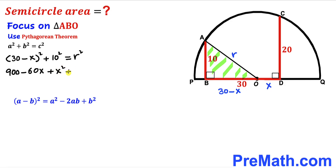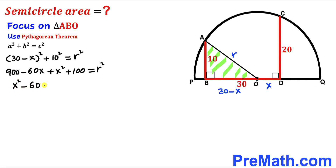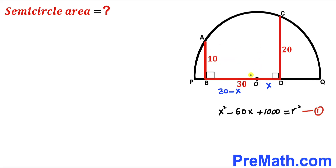Combining like terms gives us x² − 60x + 1000 = r². I'll label this as Equation 1. Now in the next step I'm going to connect the center O with point C.